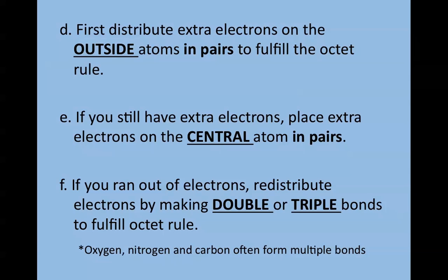Then, distribute any remaining electrons to the outside atoms in pairs. Always fill them in pairs. If you have extra electrons, place them on the central atom in pairs. Or if you run out of electrons, you'll have to redistribute those electrons to make double or triple bonds. Usually oxygen, nitrogen, and carbon can form multiple bonds if needed.